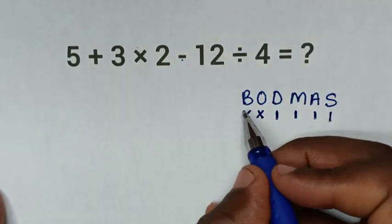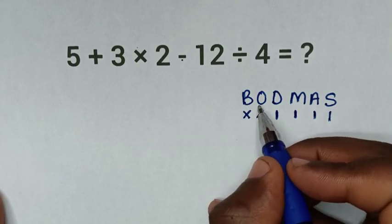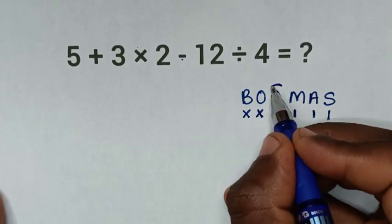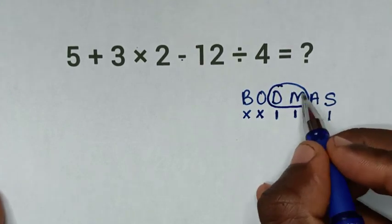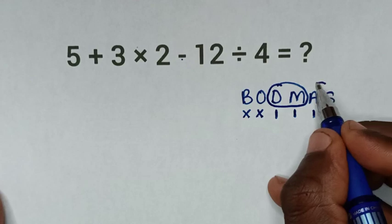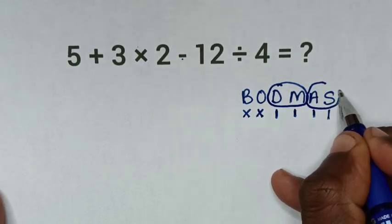So from this rule, because we don't have bracket and order, we'll deal with this group first of division and multiplication, then after finishing with this group, we'll deal with this group of addition and subtraction.